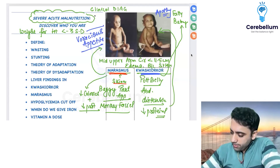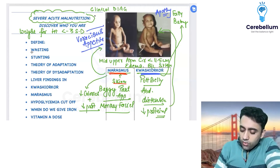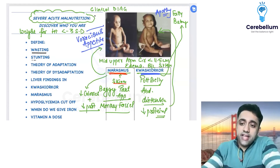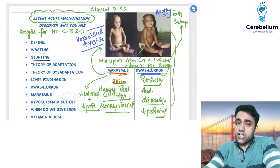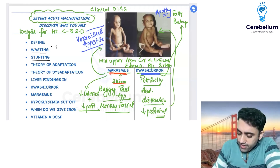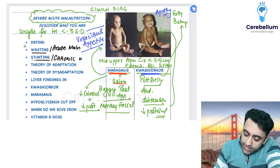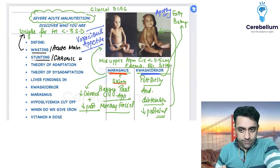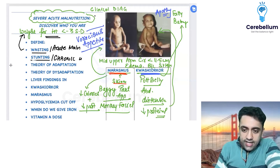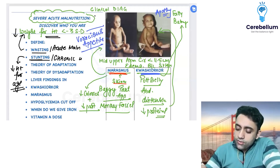There is something known as wasting and something known as stunting. Wasting is acute malnutrition and stunting is chronic malnutrition. The parameter affected in wasting is a decrease in weight-for-height, whereas the parameter affected in stunting is a decrease in height-for-age.